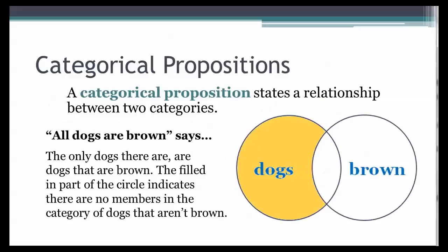A categorical proposition states a relationship between two categories. In this example, the category of dogs and the category of things that are brown. All dogs are brown says that the only dogs that exist are dogs that are brown.